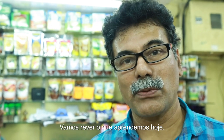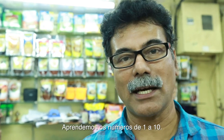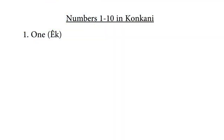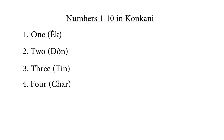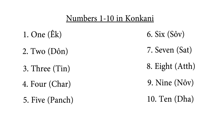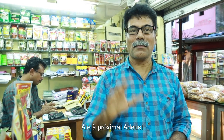So let us revise what we learned today. We learned numbers from one to ten. One is Ek, two is Don, three is Tin, four is Chaar, five is Paans, six is So, seven is Saat, eight is Aat, nine is No, ten is Da. See you in the next episode. Bye bye.